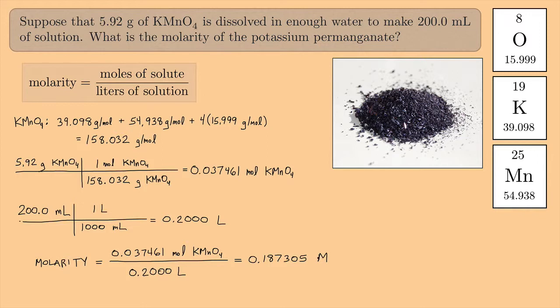And now let's use significant figures here. I have four significant figures for the milliliters. I have three for the grams. So let's round this to three significant figures. And I would get 0.187 moles per liter.